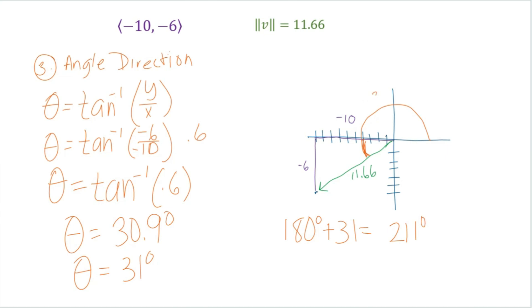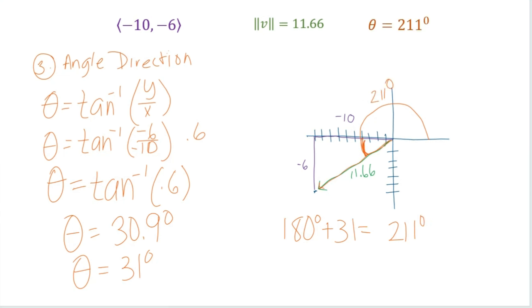So we found our component form of the vector, which was negative 10, negative 6. We found the magnitude, which is the length of the vector, is 11.66. And our angle direction is 211.